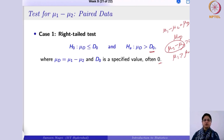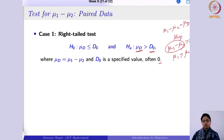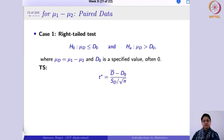We take the sample mean and denote it by d-bar, using this notation to stay in sync with what you will use in these lectures. That is why I have kept it as μd — if you want to keep it as μ1 minus μ2, that is also fine. The test statistic in this case would be d-bar minus d-naught over sd divided by root n.